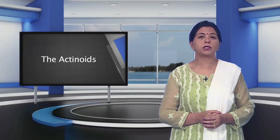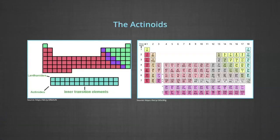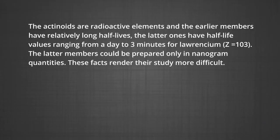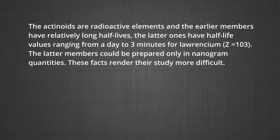The actinoid series derives its name from the first element in the series, actinium. The actinides are positioned at the bottom of the periodic table, below the lanthanides, and include the 14 elements from thorium to lawrencium. The actinides are radioactive elements; the earlier members have relatively long half-lives, while the later ones have half-life values ranging from a day to 3 minutes for lawrencium (Z = 103). The later members could be prepared only in nanogram quantities, making their study more difficult.